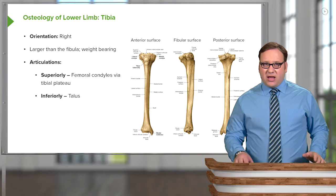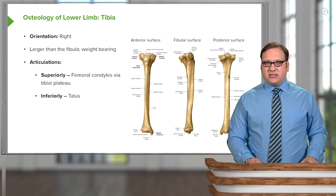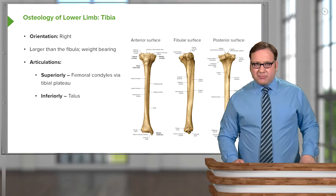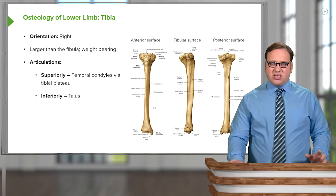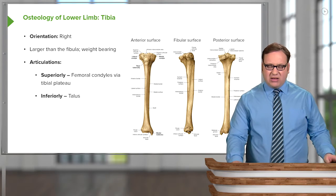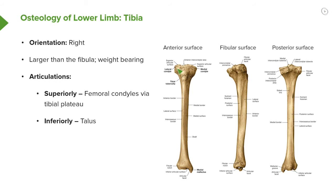The tibia is larger than the fibula and it's mostly involved with weight bearing. The articulations occur superiorly between the femoral condyles on the tibial plateau, which we can see here, and also inferiorly with the talus. The medial malleolus, when the fibula is in place, gives us two malleoli — medial and lateral — and they help to form the ankle joint.